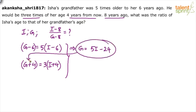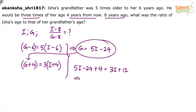Let's substitute this into the second equation. We get five I minus 24 plus four equals three I plus 12. So five I minus three I gives two I, which equals 12 plus 24 minus 4, which is 32.